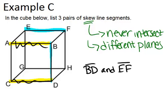Another example would be GH and AC, because those would never intersect and they could not ever be in the same plane either. So AC and GH.